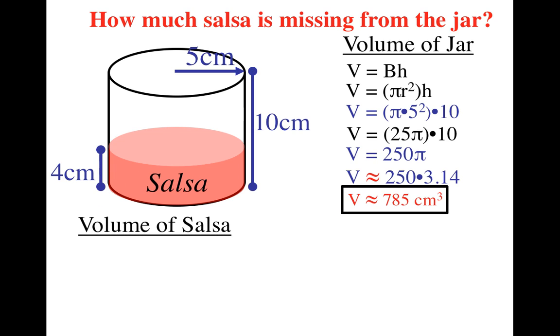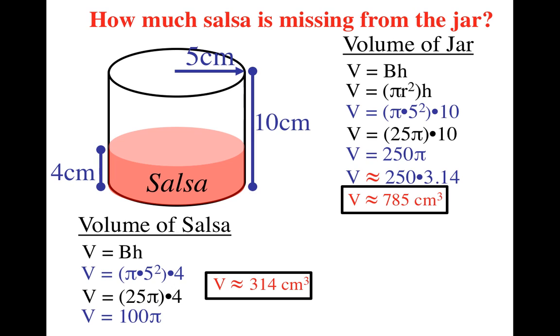So from there, I have to find the volume of the salsa. Step one, write formula. Step two, plug in numbers. Notice now my height of the salsa is only four. And step three, get answer. But that's not the answer I wanted. What I want to know is how much was eaten, how much is missing from the jar. So 750 minus 314, 471 cubic centimeters of salsa has been eaten.